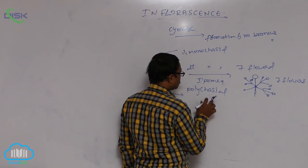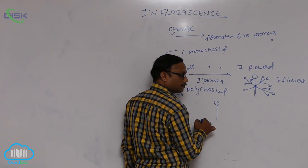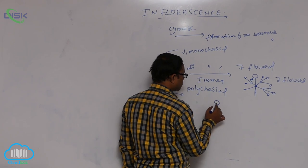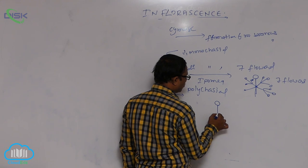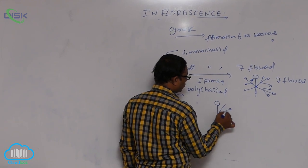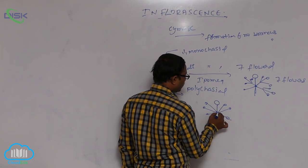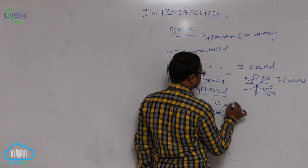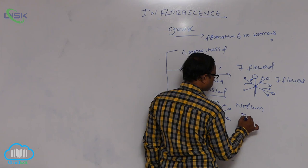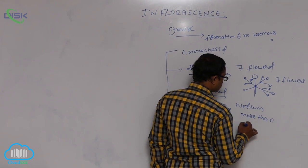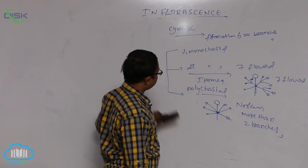Polycasial means: at the tip of the peduncle, a flower is formed, and more than two branches are formed at every node. More than two branches at every time — that is known as polycasial cymose. Example is Nerium. That is known as cymose inflorescence.